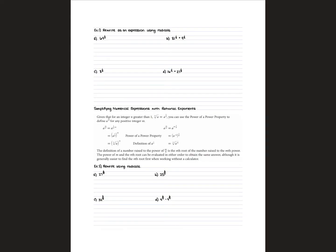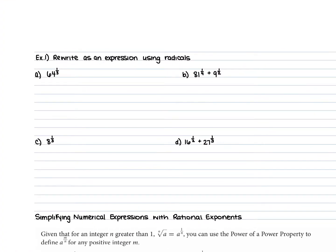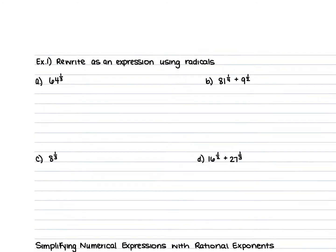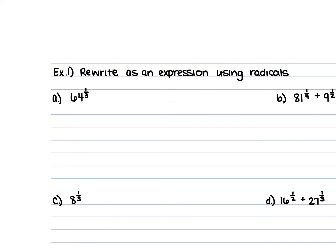In the first section of your notes, we're rewriting the expression using radicals. When we rewrite this, the first thing you want to look at is the term that is your base — that base is going to be underneath the radical. If it is raised to a power that's a fraction, the numerator of that fraction is going to be the power, and the denominator is going to be the index. So the power stays on that base, and the denominator — your index — becomes the little number attached to the radical.